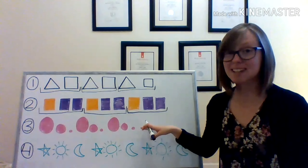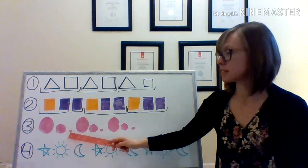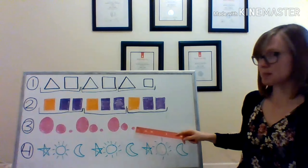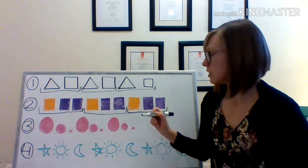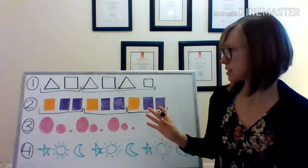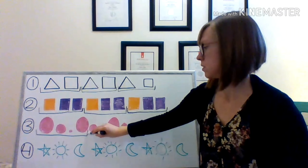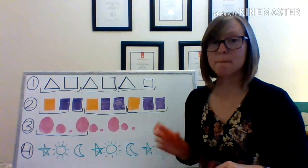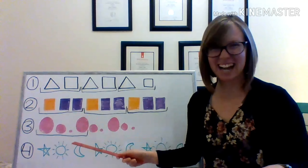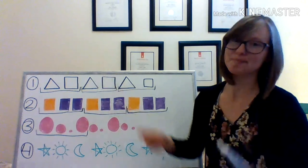Our next pattern uses size as our attribute. We have: big, medium, small, big, medium, small, big, medium, small. I'm going to take a look and find my core here. I hear three different sizes in there. So maybe let's make a core like this. I think my core is big, medium, small, big. Do you guys think I have it right? Let's see if that repeats — the next one should be a big... I didn't get it. Let's try it again.